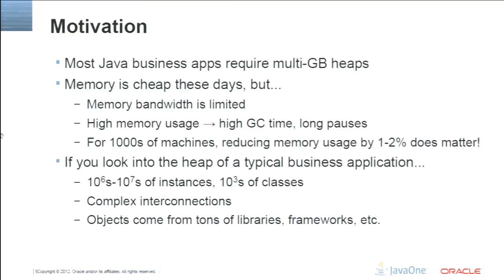If you look into the heap of a typical business Java application, you'll see quite a number of objects and classes — it may be millions or tens of millions of objects, and tens of thousands of classes. I've seen applications with as many as 50,000 to 80,000 classes, and about half of these have no instances. These objects often form complex graphs and come from tons of various libraries and frameworks, not necessarily well understood.